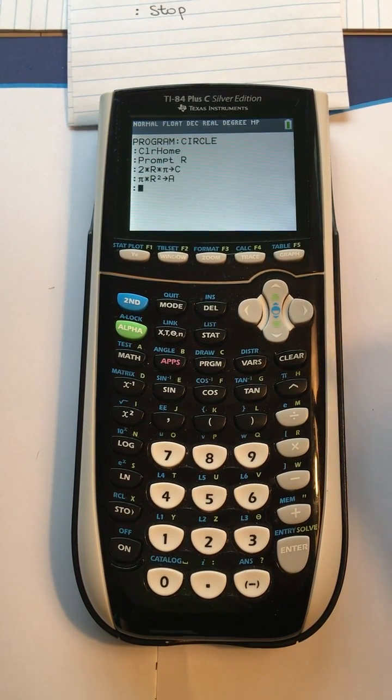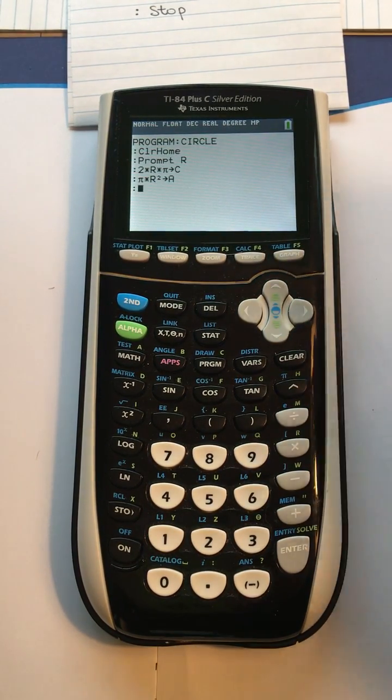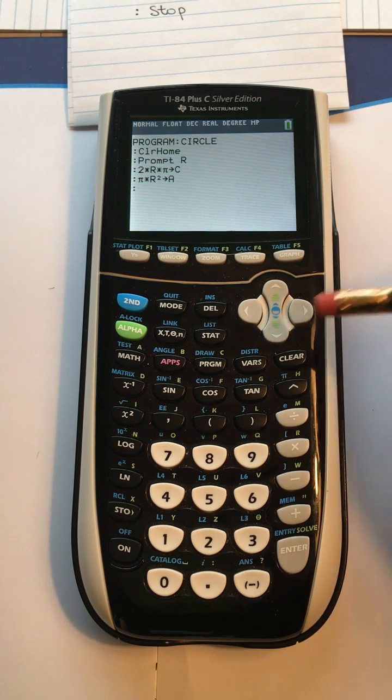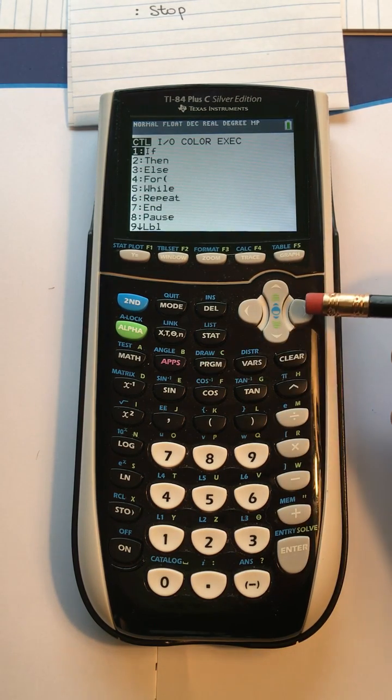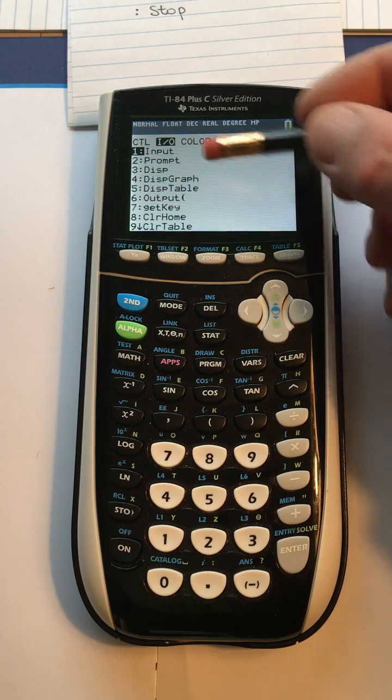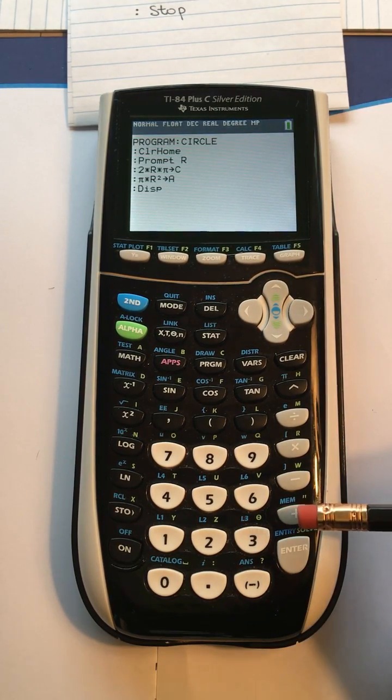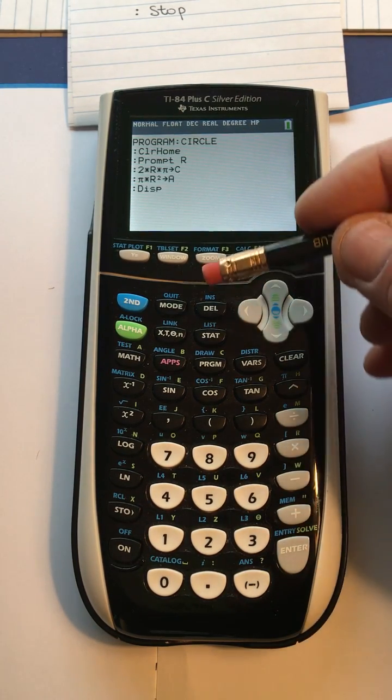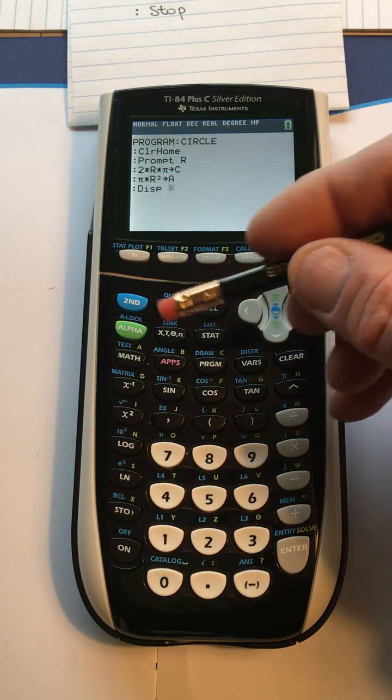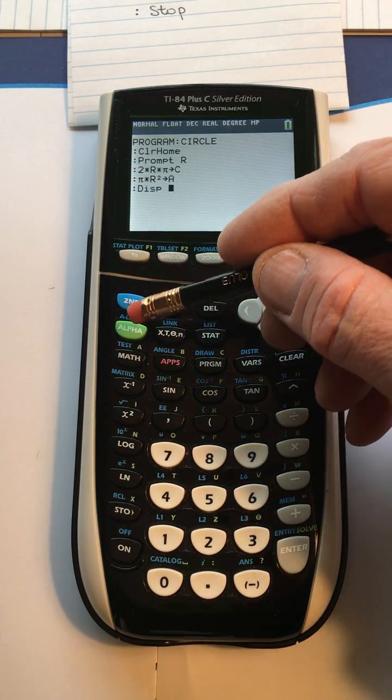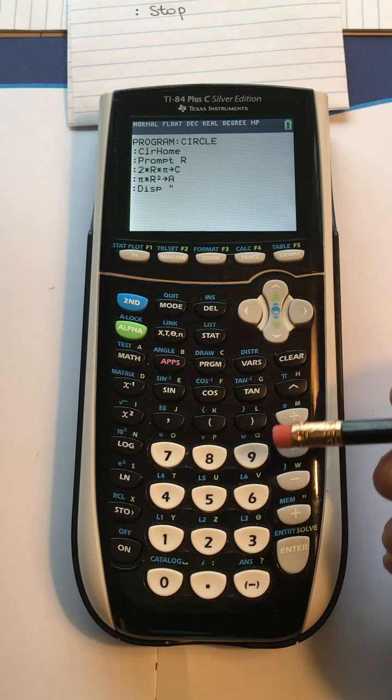So we take the answer and we want to put it, but we want to put a label in front of it. So we're going to program, go to input output, and down to number three, display. We want to display a word, so we have to tell the calculator it's a word and not to multiply our variables. So we're going to do alpha quotes and then area.